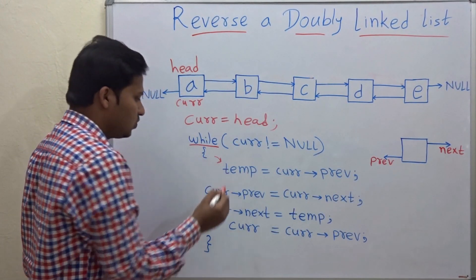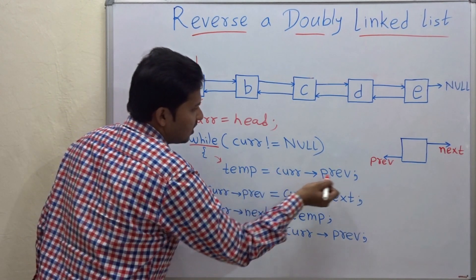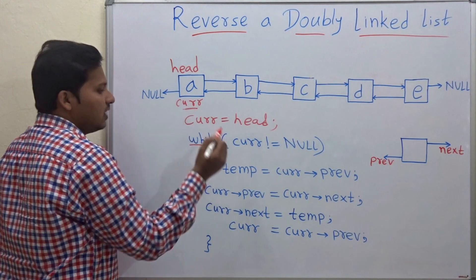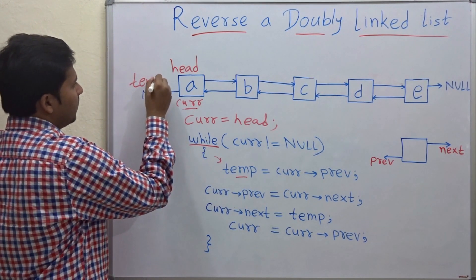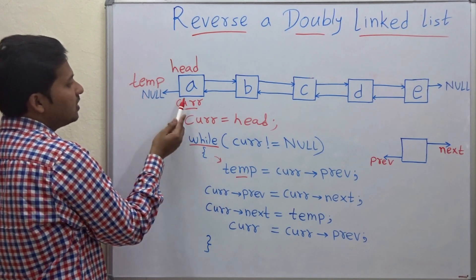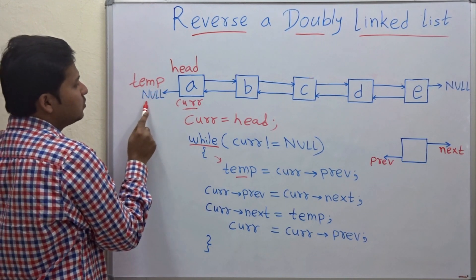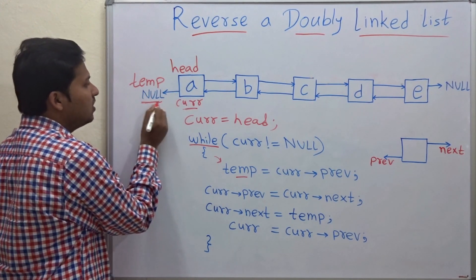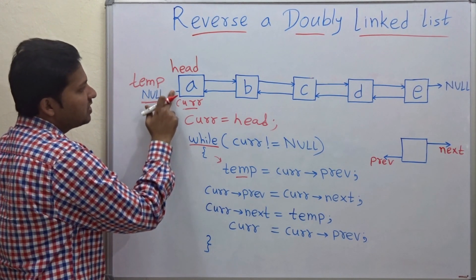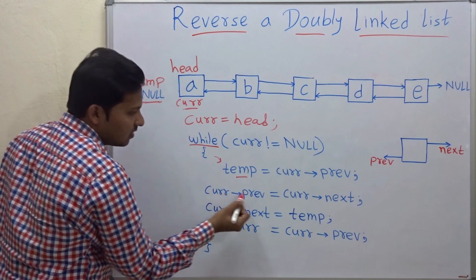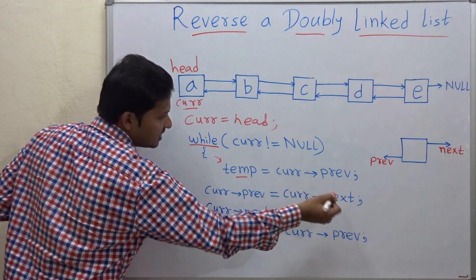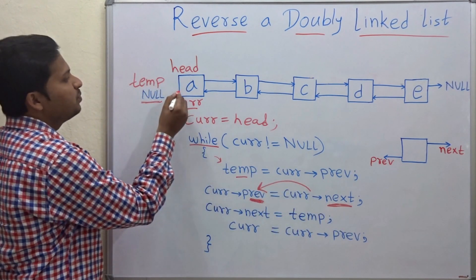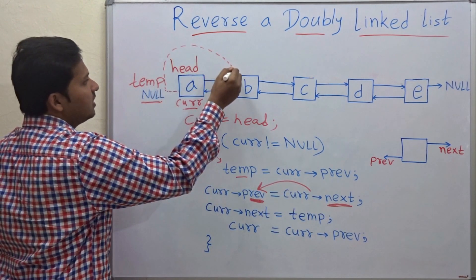We go inside the while loop. The first step is: temp = current->previous, meaning we store the previous node of the current node in pointer temp. The previous node of current is null, so temp will point to null. Now as temp is holding the address of the previous node, we change this previous link: current->previous = current->next, assigning the next node to the previous link.